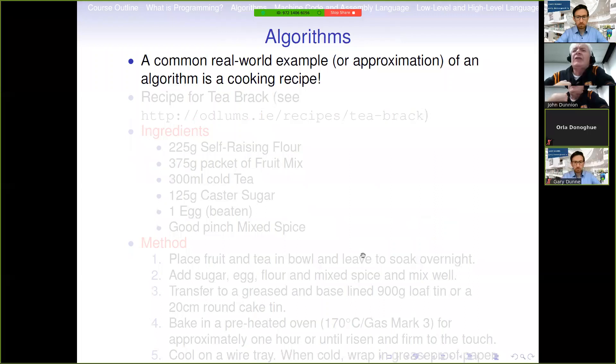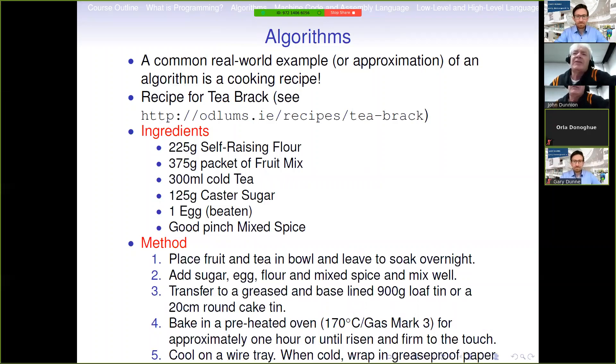I'm just going to finish off then by looking at a real-world analog of an algorithm. Everybody since lockdown has been doing lots of cooking and baking. Certainly it's been happening in our house. This possibly isn't one of the recipes that you've been doing because it's not the season for tea brack, even though I think personally that tea brack should be in season all year round. So this is actually a real-life recipe. It comes from Odlums, the Odlums website. So you need self-raising flour, fruit mix, cold tea, caster sugar, an egg and mixed spice and so on. And then you've got the ingredients, which are your basic variables if you like for your program. And then you've got your method, which is your algorithm.